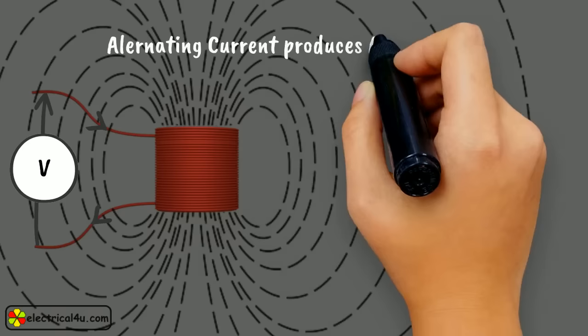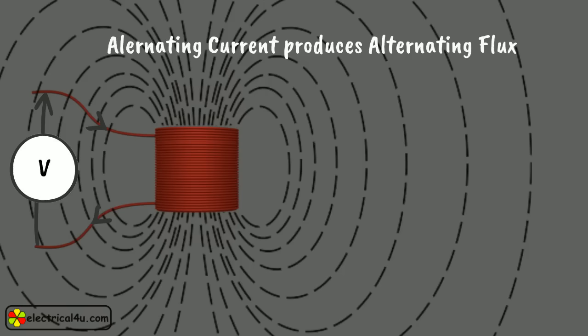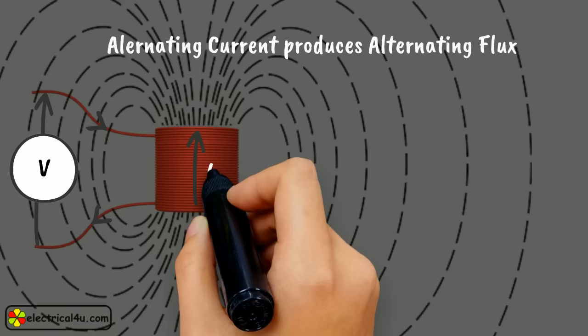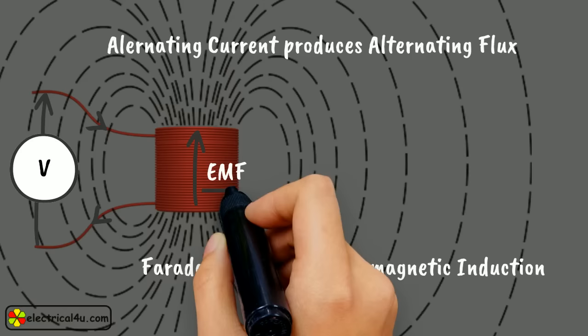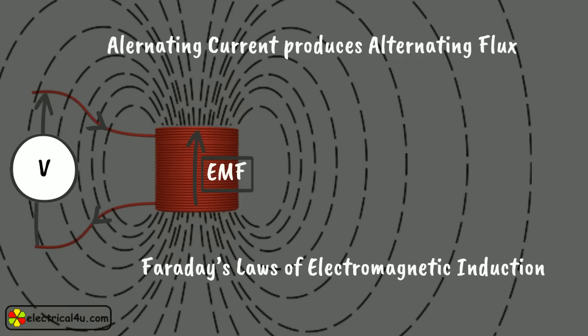The flux lines link the winding itself and, as the flux is varying, there will be a self-induced EMF across the winding. This phenomenon is due to Faraday's laws of electromagnetic induction. This induced EMF or voltage is the same in magnitude and opposite in polarity to the supply voltage.